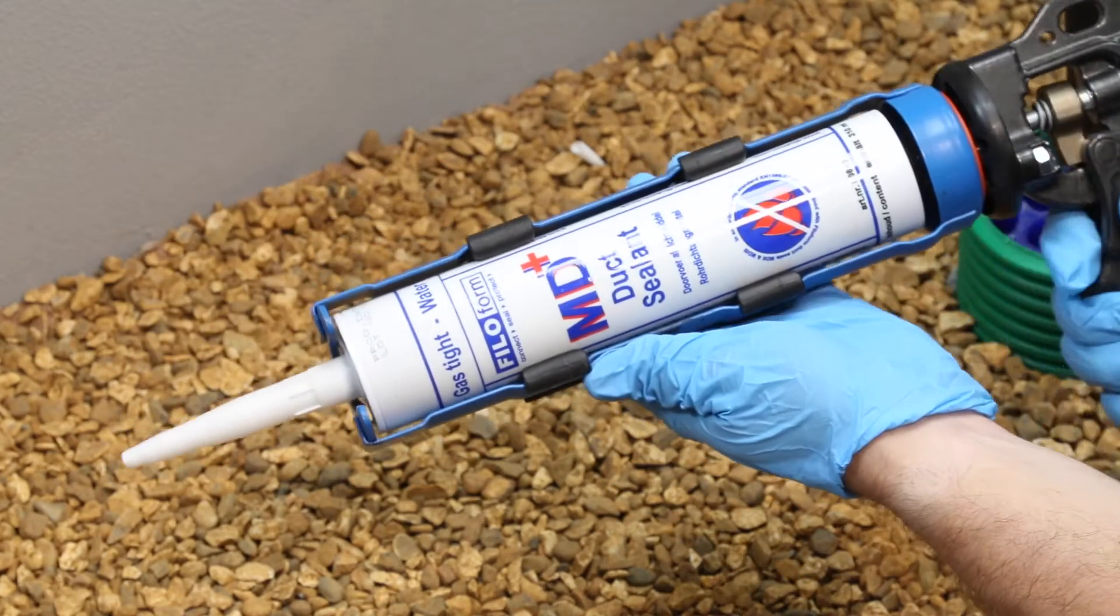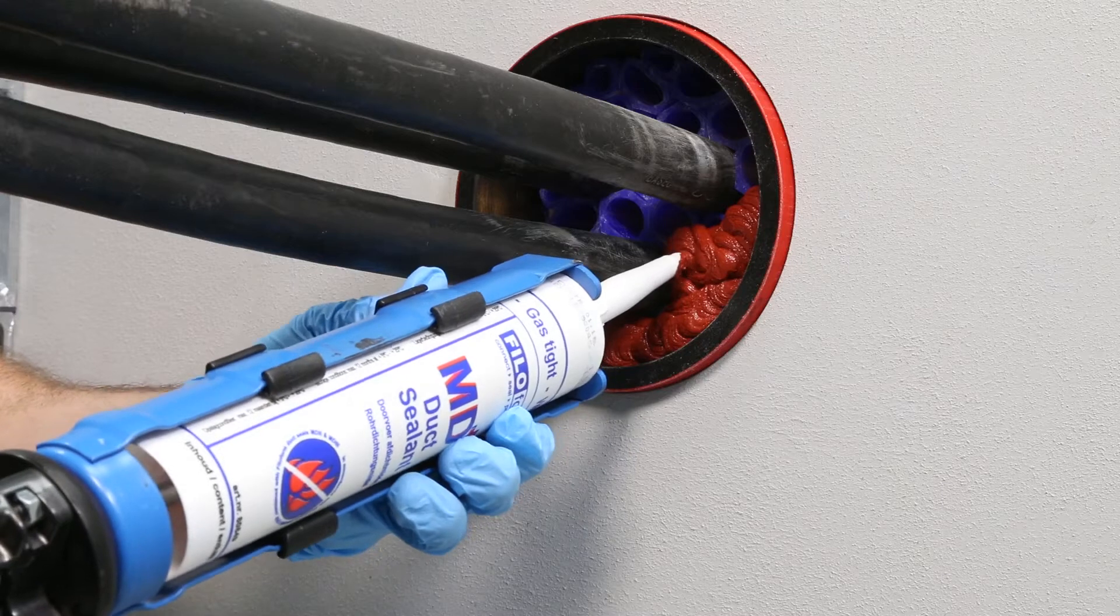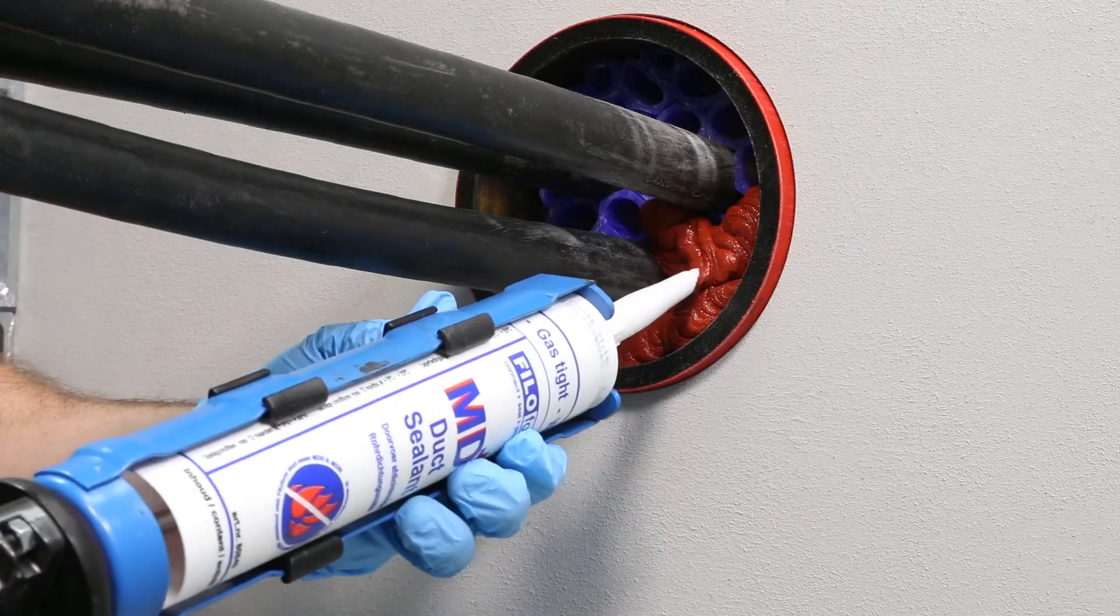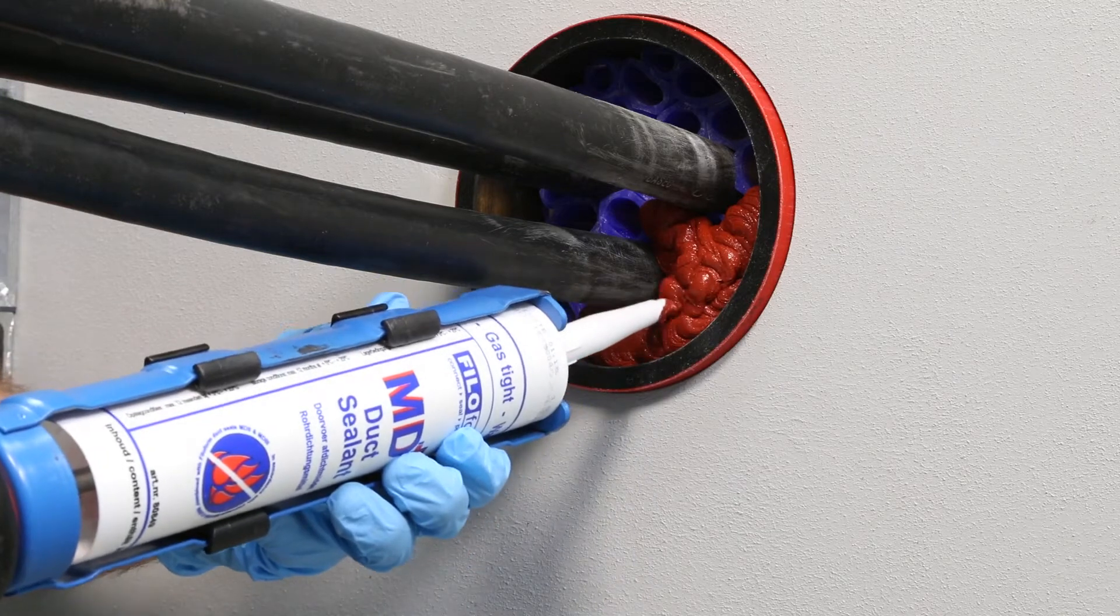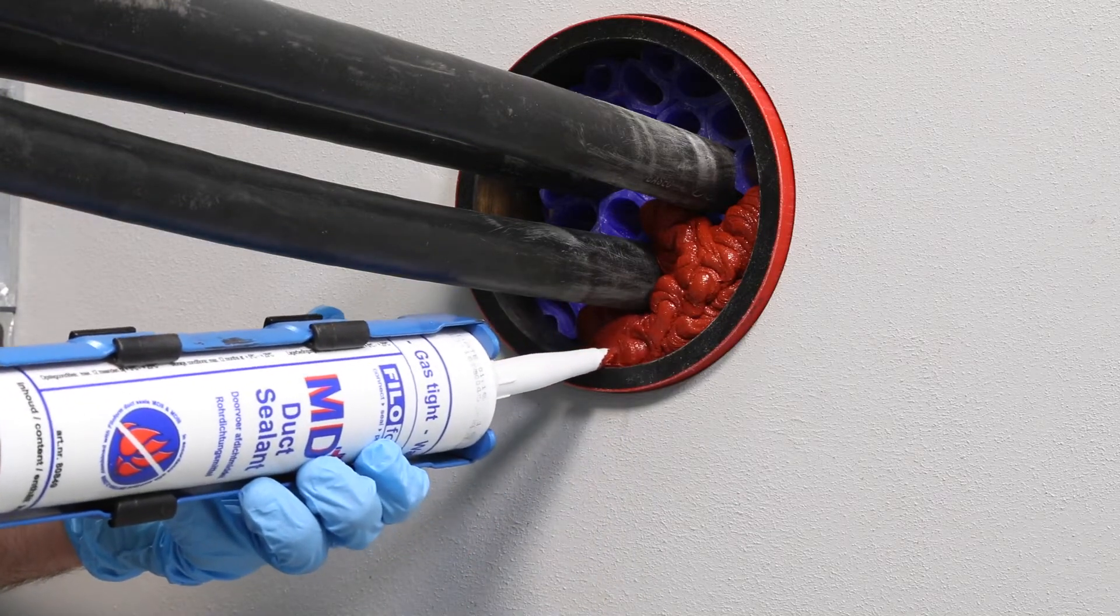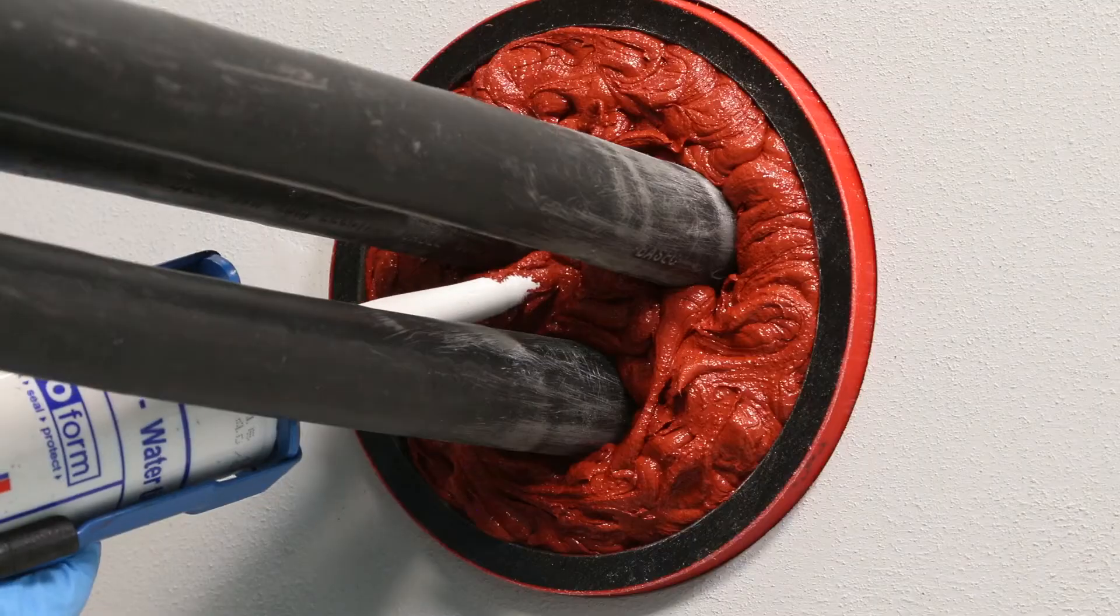Apply the MD Plus onto the hexagonal tubes, ensuring you get into every gap and around every cable or pipe. Fill up the end of the duct until slightly proud of the duct end.